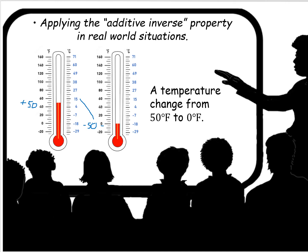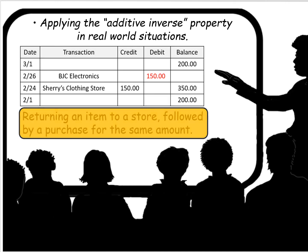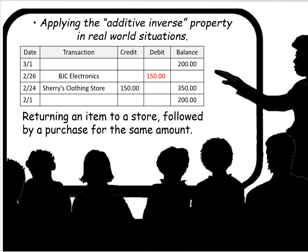Opposite values combine to make zero. Here's the last example: suppose we go to Sherry's clothing store and return items we bought last week. We get a $150 credit on our bank ledger. Then we go to BJC Electronics and find an awesome set of earphones, purchasing them for $150 — that shows up as a debit of minus $150. We started with $200 in our bank account, got a credit of $150 bringing it to $350, then spent $150 and we're right back where we started. Positive 150 plus negative 150 is zero.